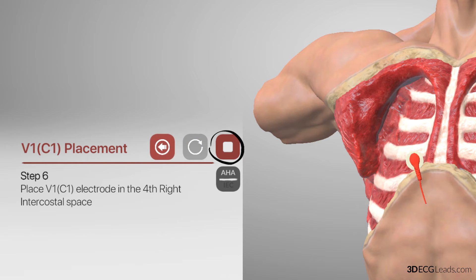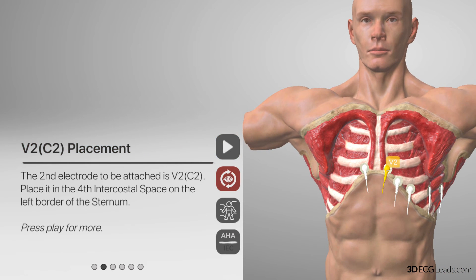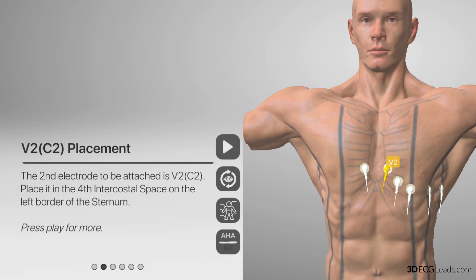So stop the animation now by pressing the stop button. We will move on to the second lead placement. The second lead to be placed is V2, and it is placed in the fourth intercostal space on the left border of the sternum. It is identical to the method shown for placing V1, and the steps will be repeated, but on the left side. To view the V2 demonstration, press play for the placement technique.